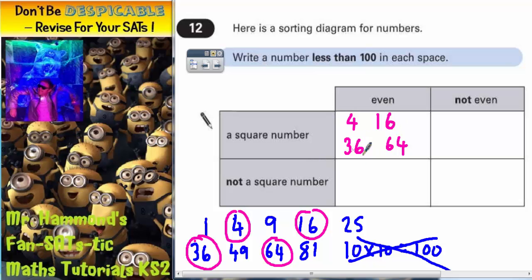You don't have to write all of them. You can just write any one of those. Not even but square number, which is this box. Not even but still square. Square is all the ones that we haven't circled here. So that's 1, 9,